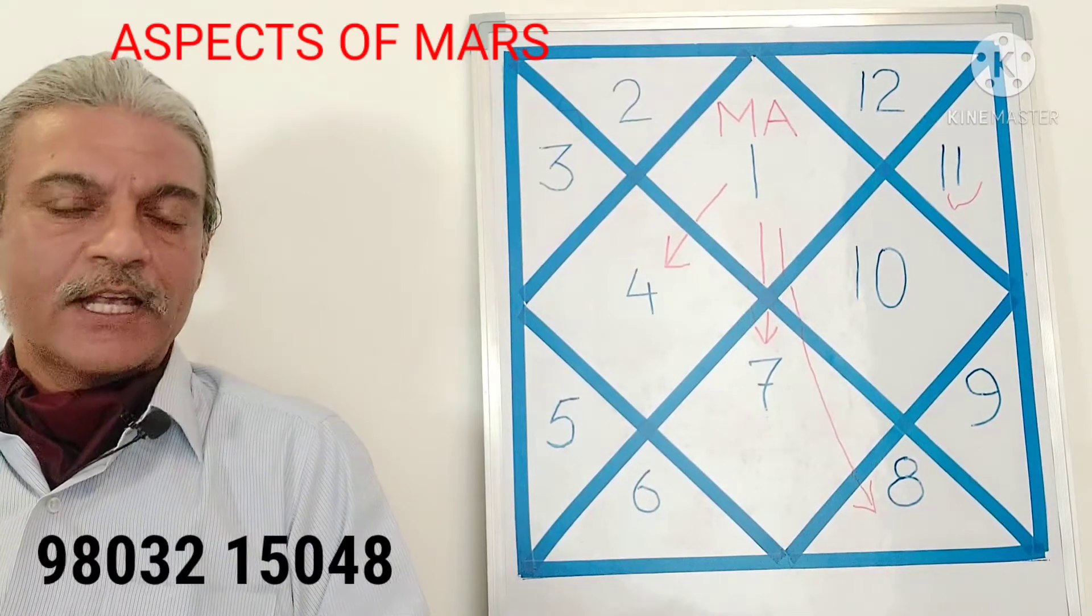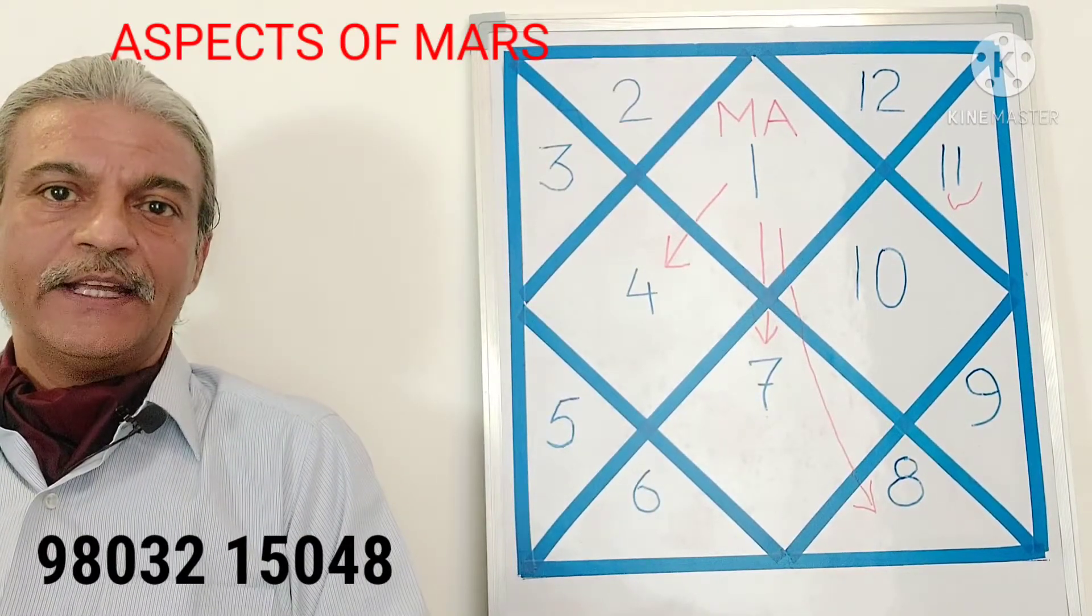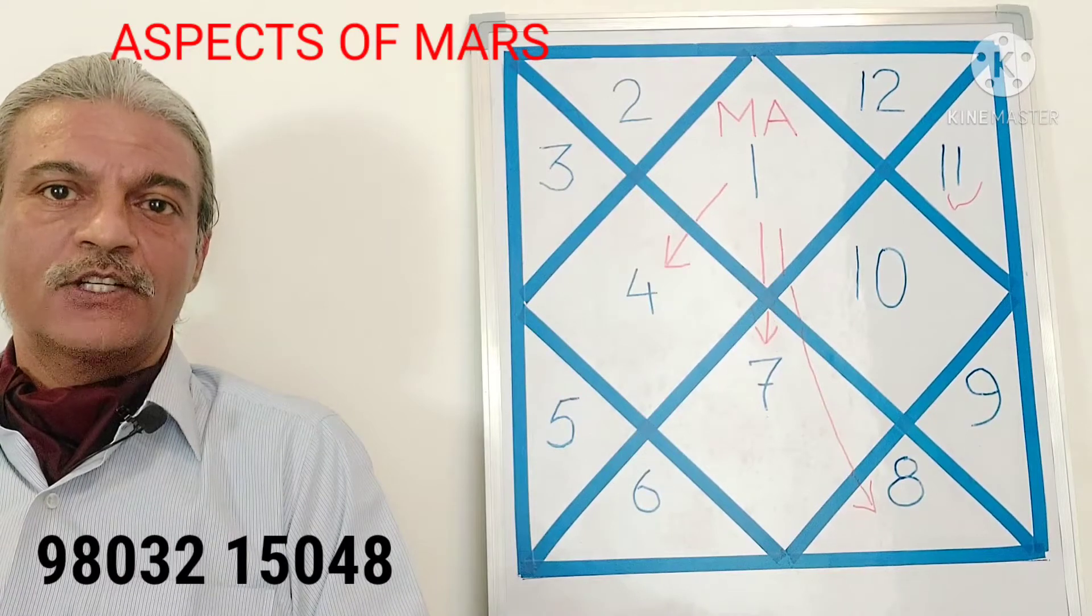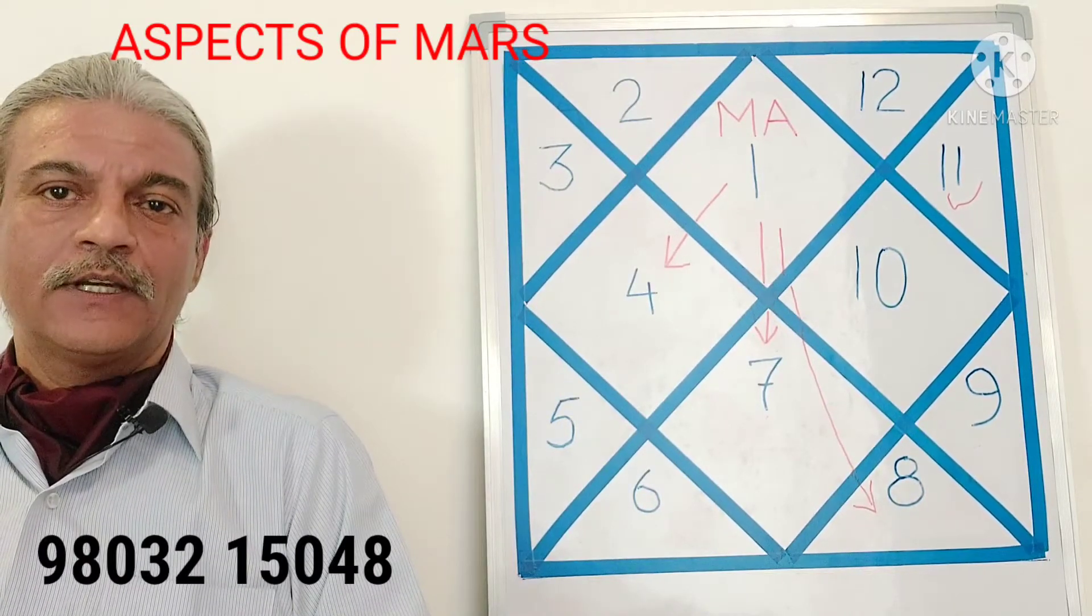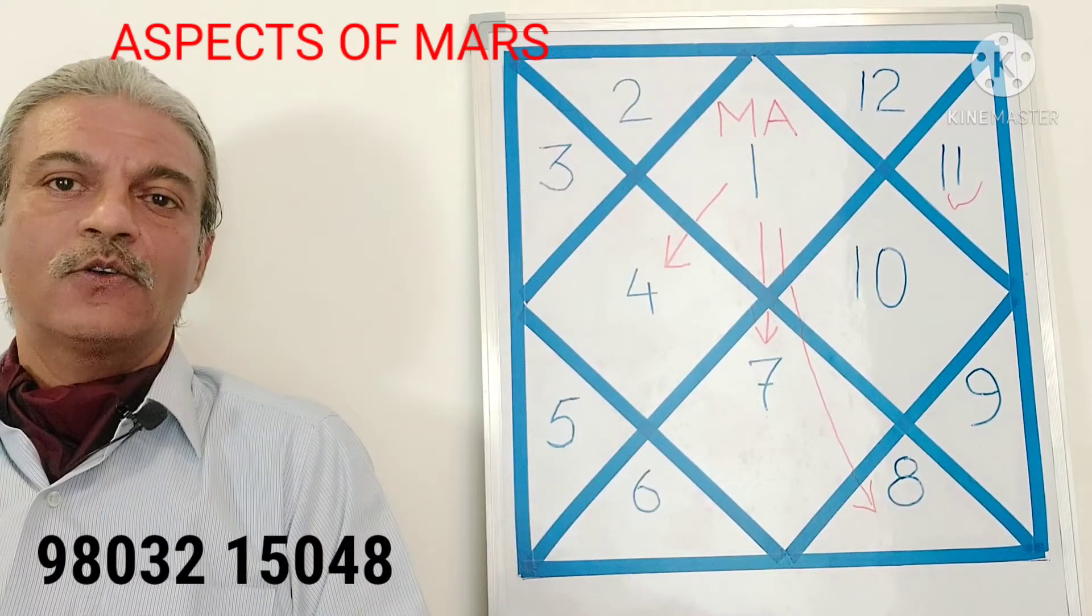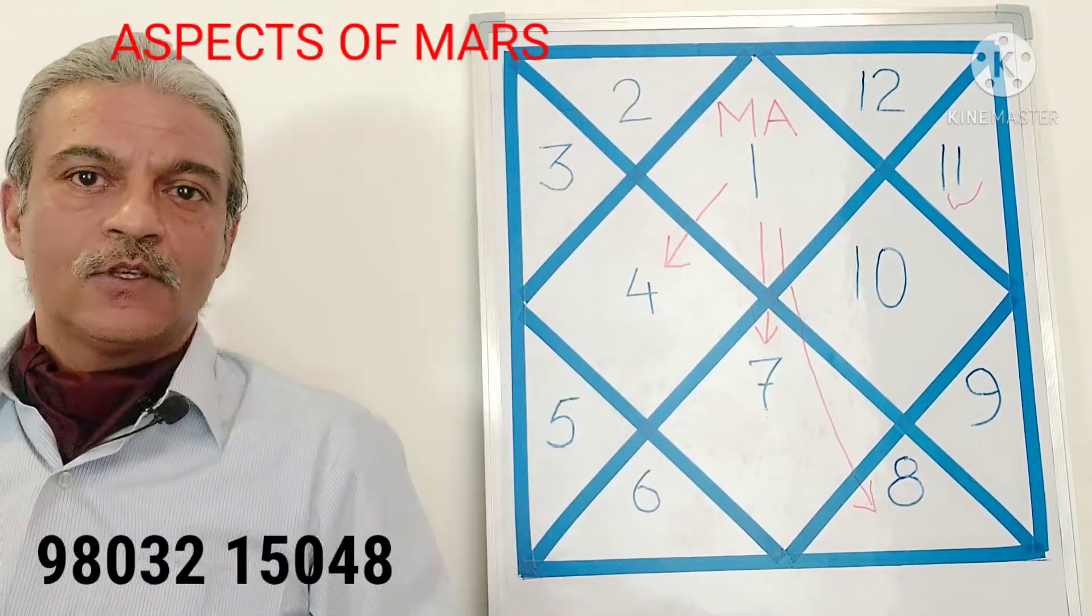Mars has got three aspects. Wherever Mars is sitting, from that position, Mars will aspect the house which is fourth to it, the house which is seventh to it, and the house which is eighth to it.